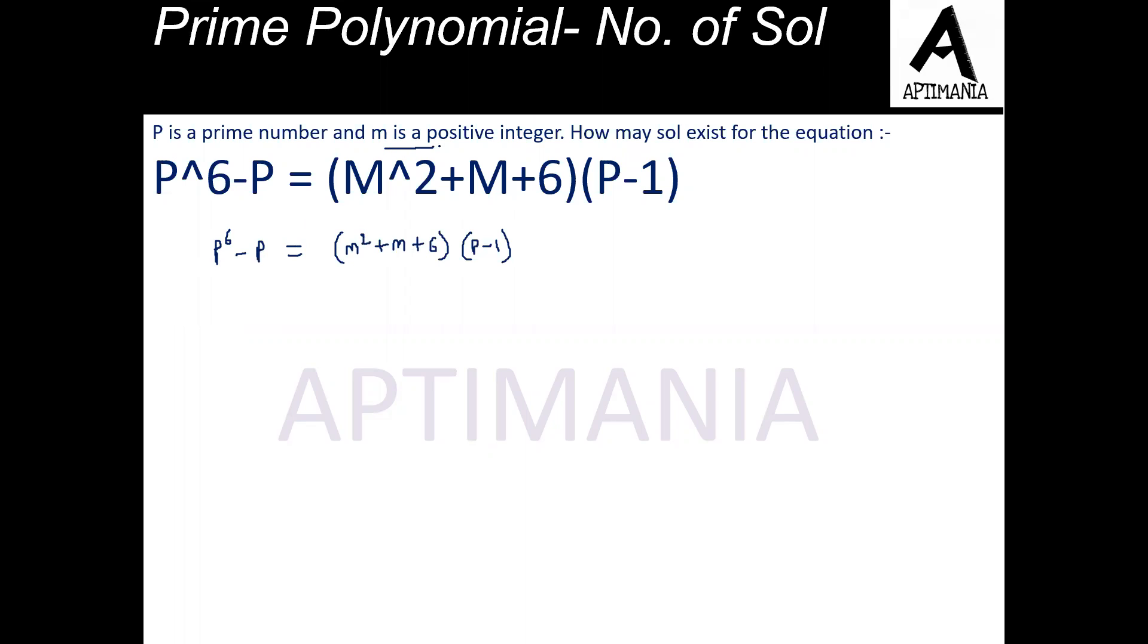Now we know that M is a positive integer. So this value has to be an integer only because M square will be an integral value. M integer, 6 integer, plus sum of 3 integers will be integer only. So this further means that P^6 - P is definitely divisible by P - 1 and this must be an integral value. And this is equal to M² + M + 6.